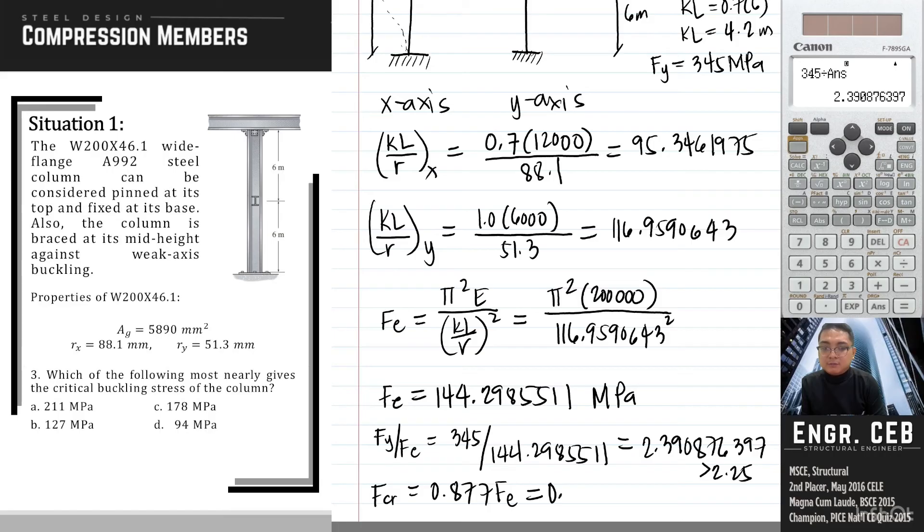Let us compute for this one. 0.877 of Fe, that is equal to 126.550 MPa, letter B.